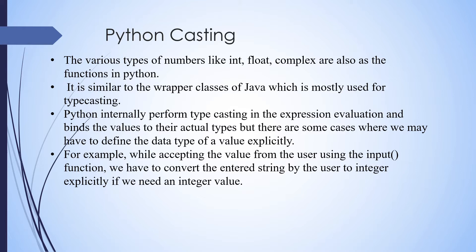The various types of data types include int, float, and complex. These are also present as functions in Python when setting the data type. Type casting is very similar to the wrapper classes of Java, which is mostly used for type casting — meaning when we cast a data type from one type to another.